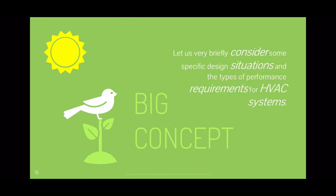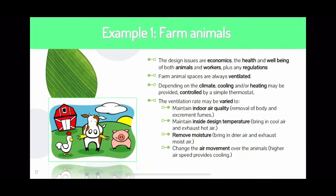Another example of where you can use HVAC systems is for farm animals. The design issues are economics, health and well-being for both animals and workers inside the farm, plus any regulations imposed by the government of the country where the farm is built. Farm animal spaces must also be ventilated; depending on the climate, cooling and/or heating may be provided, and it must be controlled by a simple thermostat — it must not be complex.